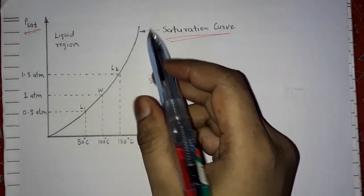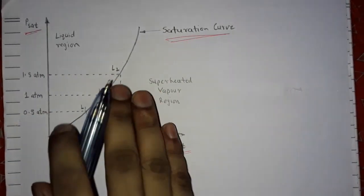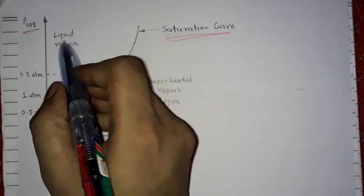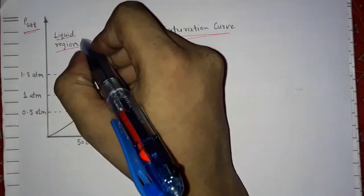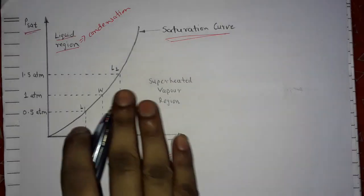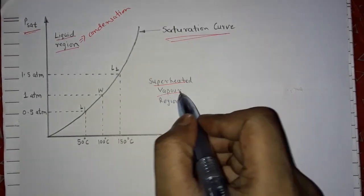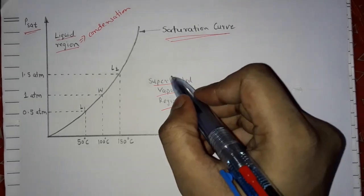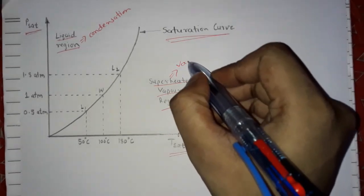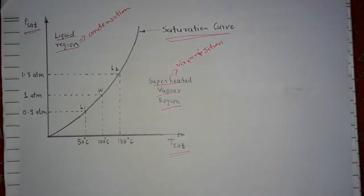On the left side of the saturation curve there is a liquid region. This region is due to the condensation process. On the right hand side of the saturation curve there is a superheated vapor region. This region is due to the vaporization process. To understand the saturation pressure and saturation temperature concept we will take examples.